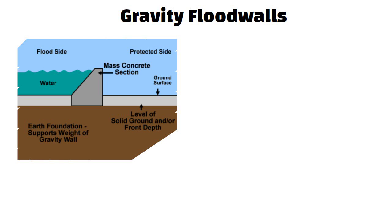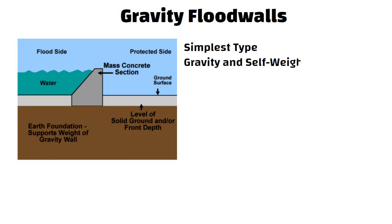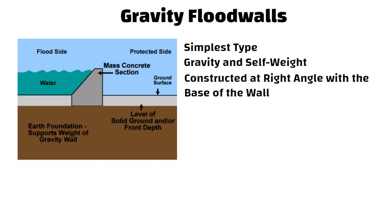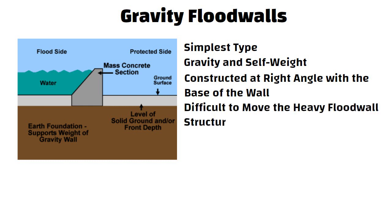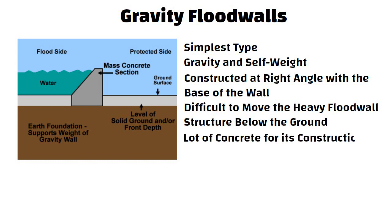Gravity flood walls. It is the simplest type of flood wall. It works based on gravity and self weight. It is constructed at a right angle with the base of the wall larger and heavier than the top to hold on to the ground. The flood water finds it difficult to move the heavy flood wall structure below the ground. It requires a lot of concrete for its construction.